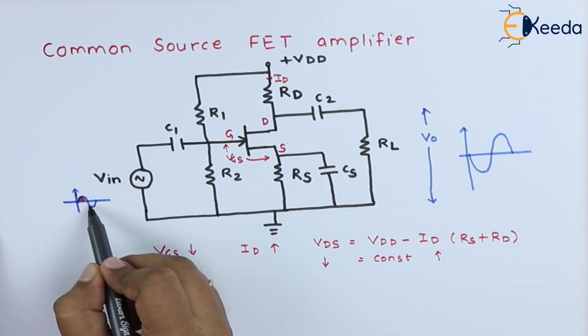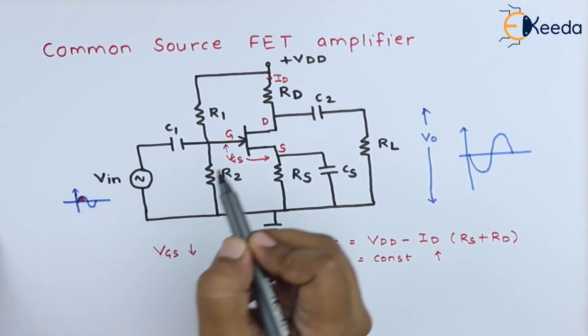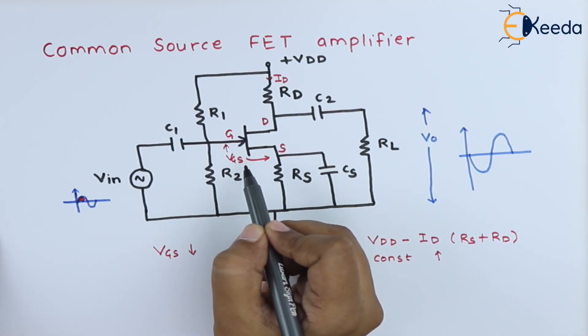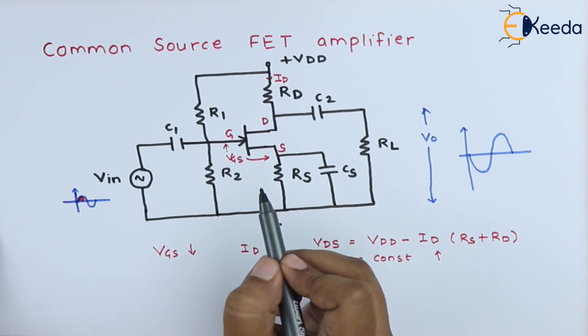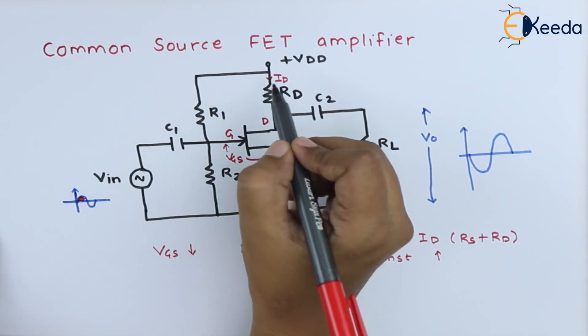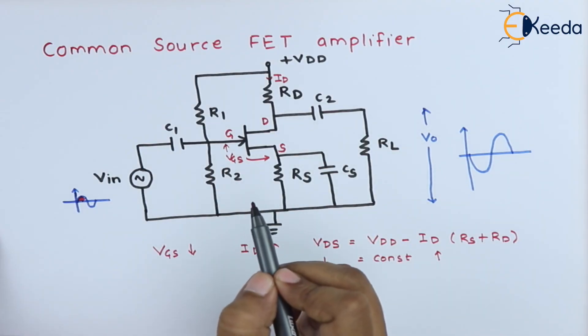During the negative half cycle of the input signal, the gate-to-source voltage becomes more reverse biased. The channel width of the n-channel JFET decreases, and because of that, current ID decreases.